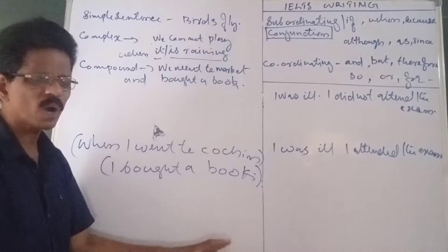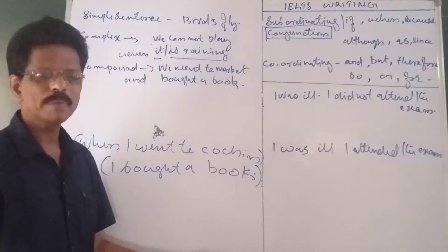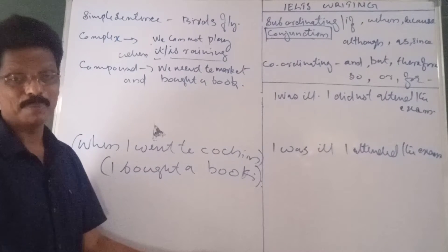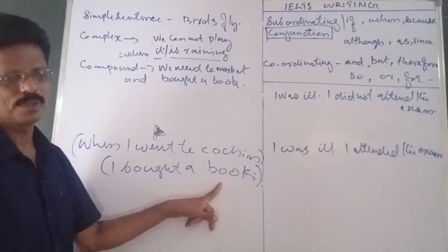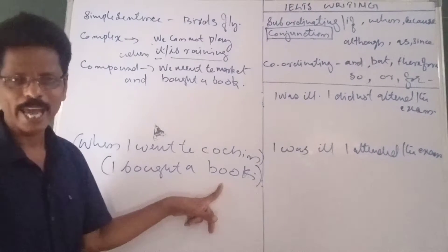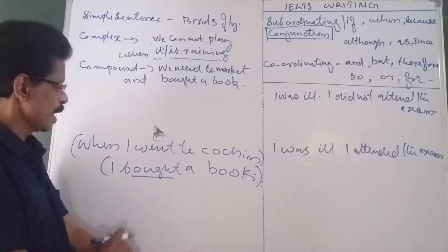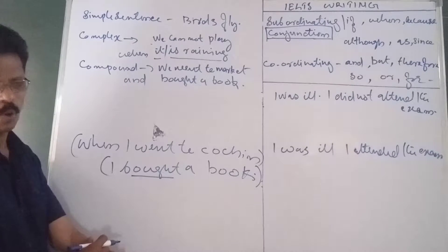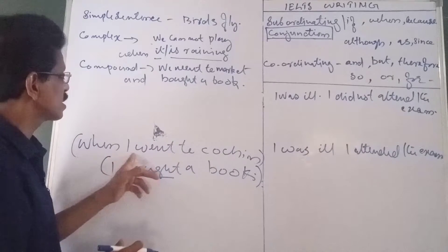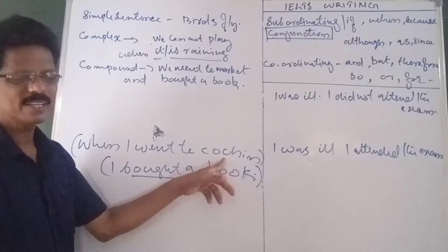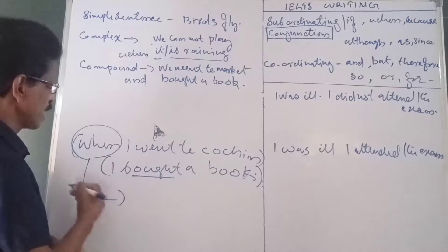If you say 'I went to Cochin,' the meaning is okay. But when you say 'when I went to Cochin,' the meaning remains incomplete. To complete it, you add: 'When I went to Cochin, I bought a book.' The main idea and the main verb is 'I bought' — that is the main clause or principal clause. The other part is subordinated to it, so it is called a subordinate clause. Main clause and subordinate clause, connected together by a subordinating conjunction.